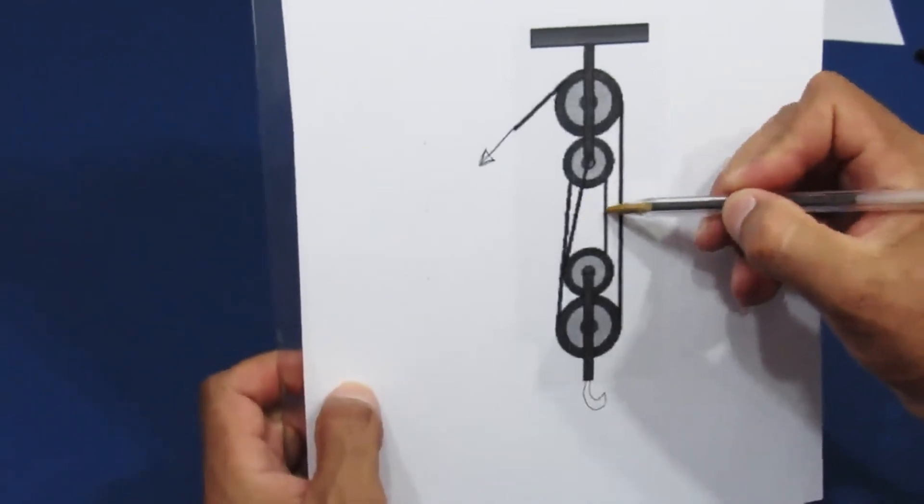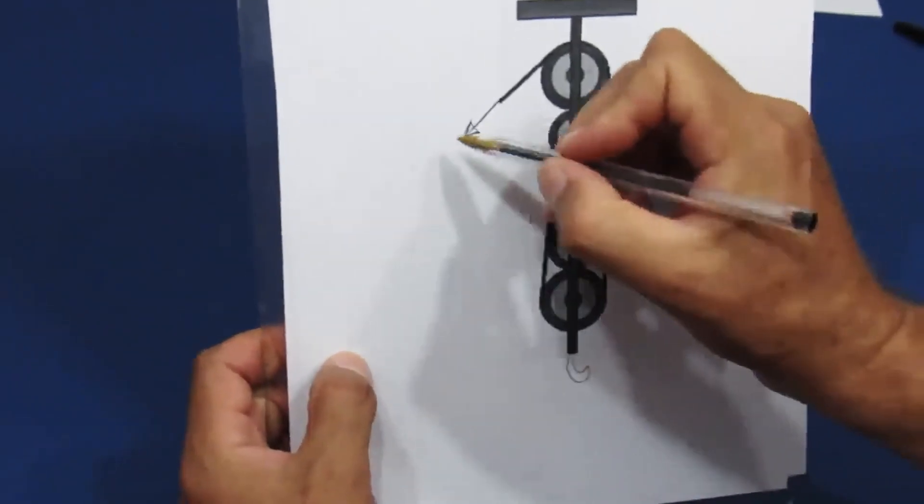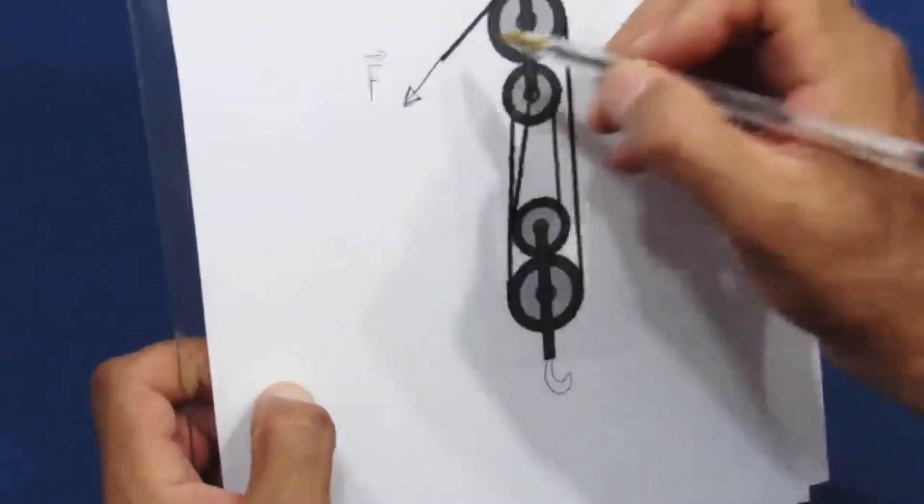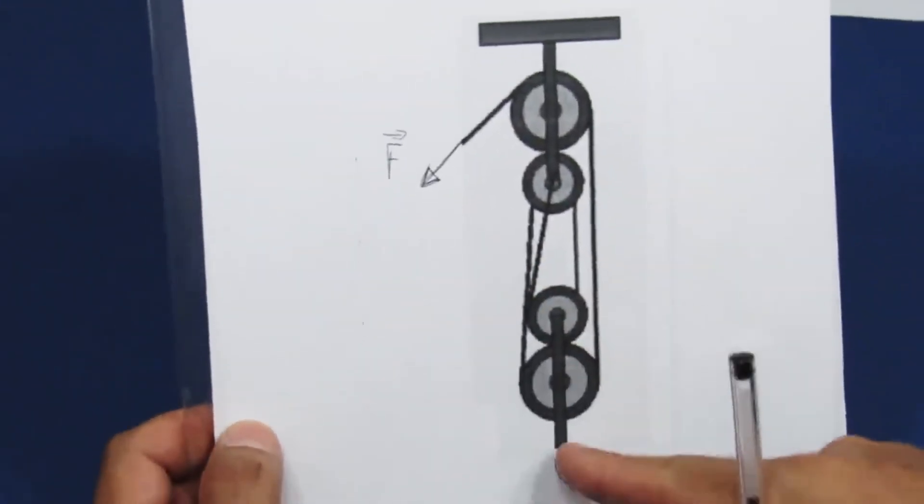In this case, I have one, two, three, four. So if I apply a force F on this cable, a force four times greater will appear here on the hook.